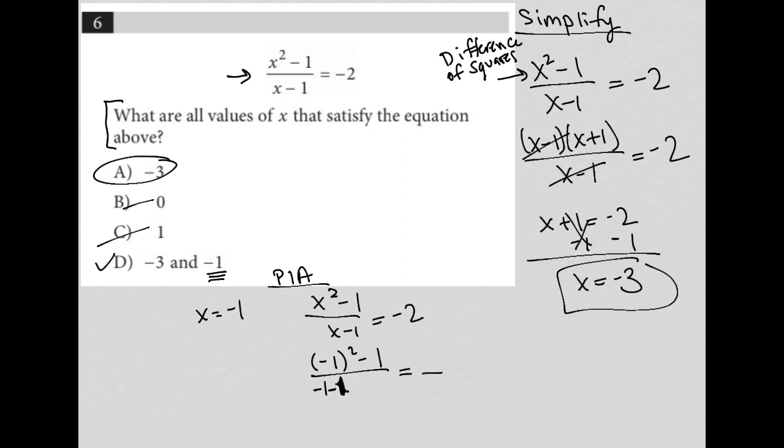So my denominator will be negative 2. And then I can see that negative 1 squared becomes positive 1 because negative 1 times negative 1 is positive 1. 1 minus 1 is 0. So this is equal to 0, which is not equal to negative 2.